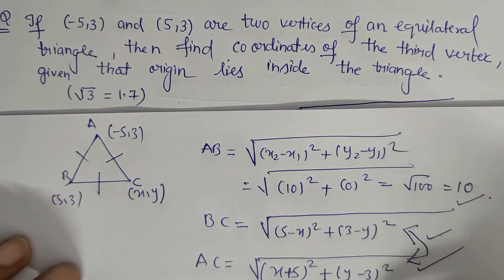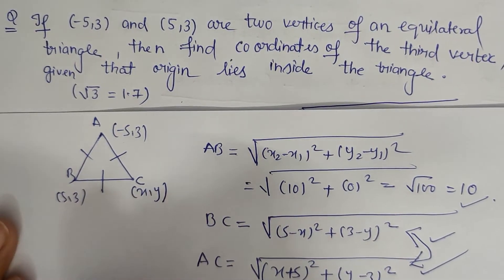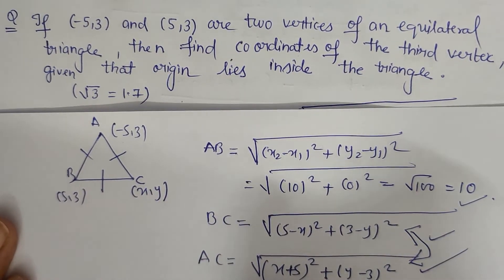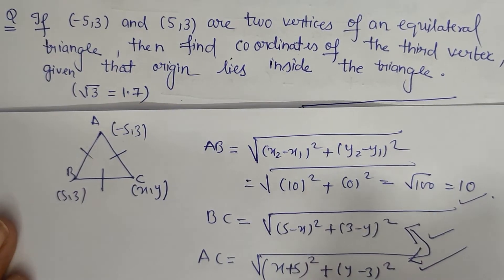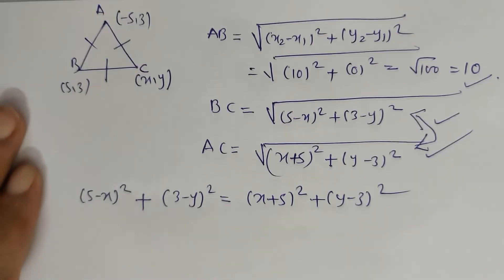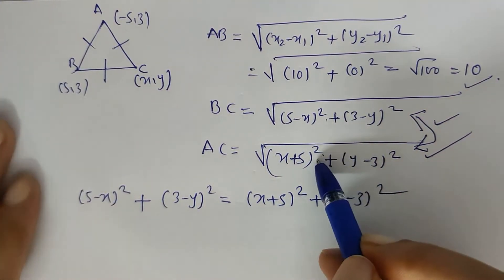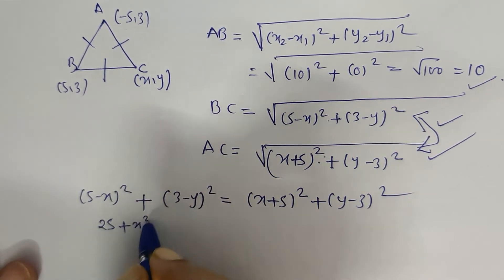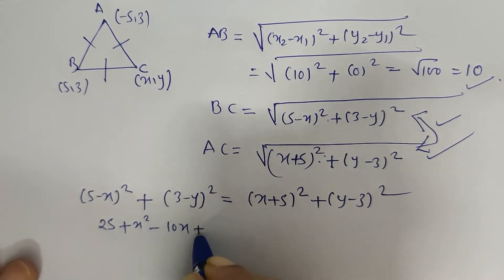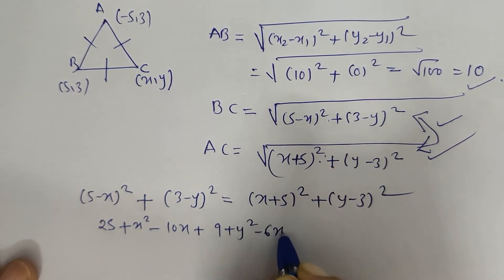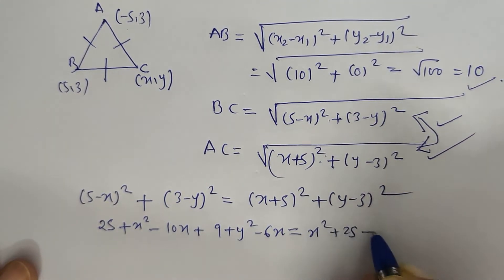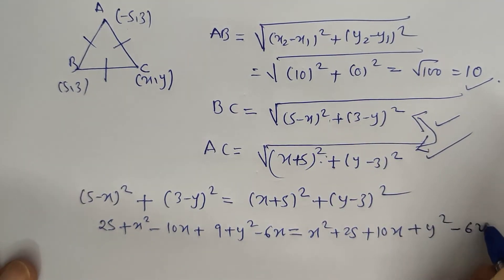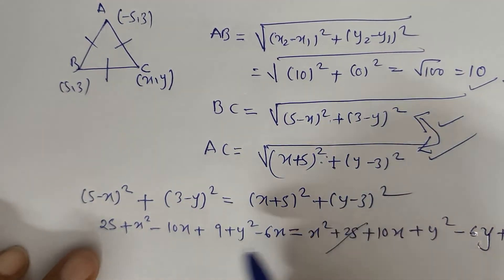Equating BC and AC and squaring both sides gives us: 5 minus x whole square plus 3 minus y whole square equals x plus 5 whole square plus y minus 3 whole square. When we expand both sides using the identity a square plus b square minus 2ab, we get the expanded forms on each side.